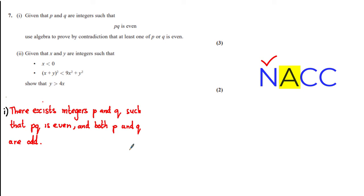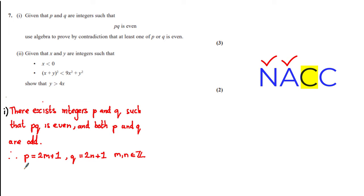The next thing we need to do is assume that this negation statement is true. In the exam you don't actually need to write that down — we can just bear it in mind and move on. The really important part is performing calculations based on the assumption. Assuming both p and q are odd, we can write p = 2m + 1 and q = 2n + 1 where m and n are integers. This algebraically shows that p and q are odd.